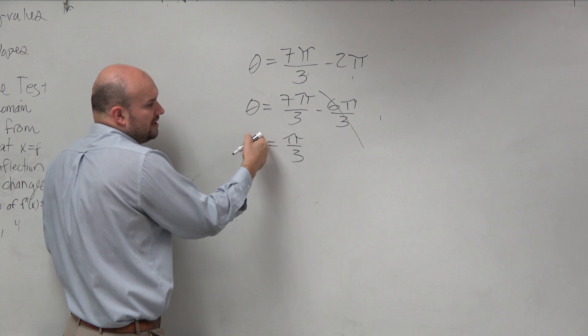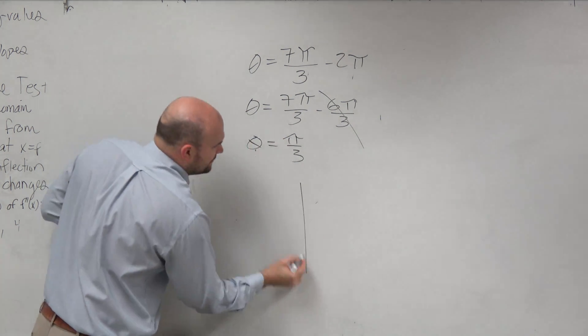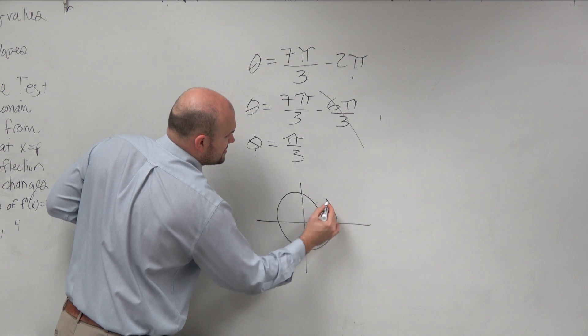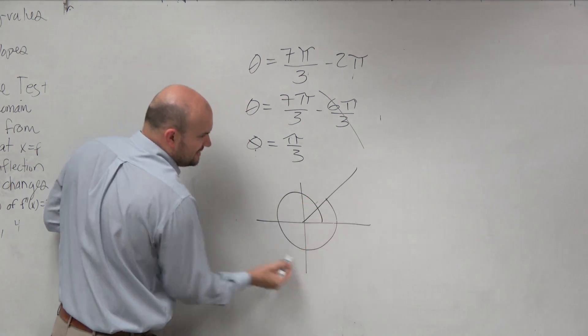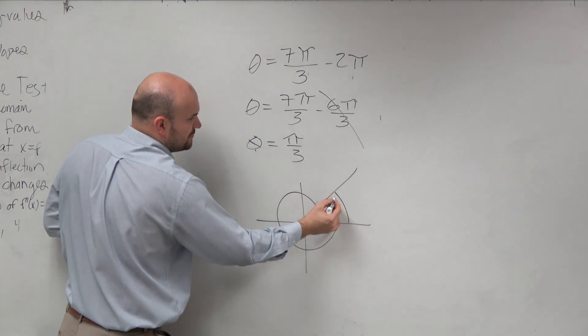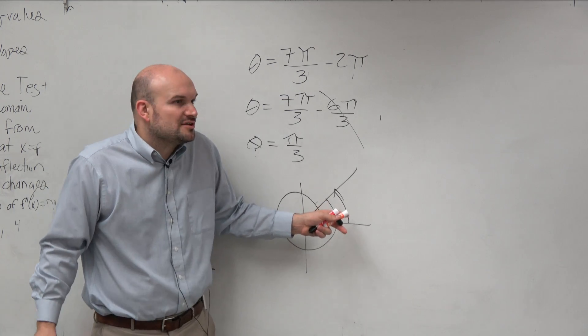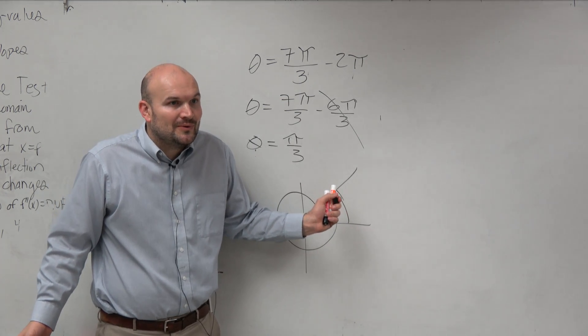So my angle, if you guys actually graph this, 7π over 3 looks like this. By subtracting that revolution, I'm just left with this angle, and that angle also happens to be my reference angle.